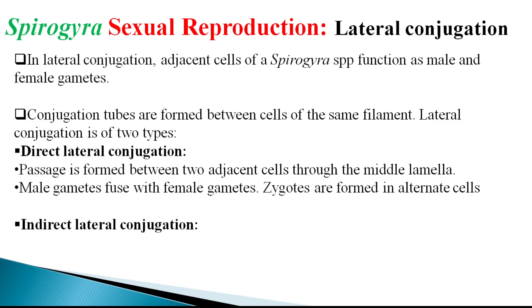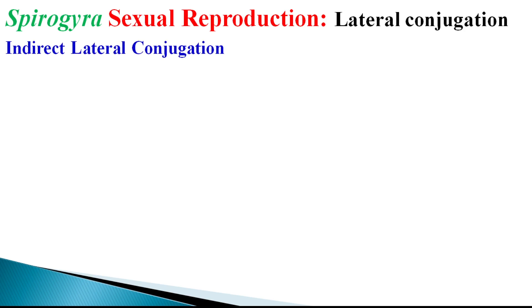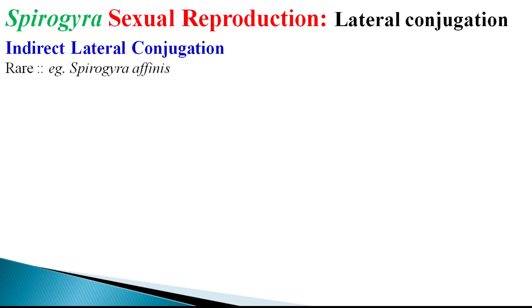In direct lateral conjugation, the male gametes fuse with female gametes producing the zygote, and zygotes may be found in alternate cells. In indirect lateral conjugation, a conjugation canal is produced by the cells having male gametes, which joins to the adjacent cell having female gametes. Indirect lateral conjugation is the rarest case and is met with in very few Spirogyra species.